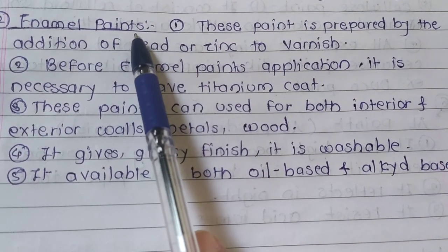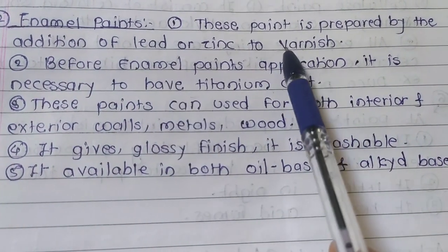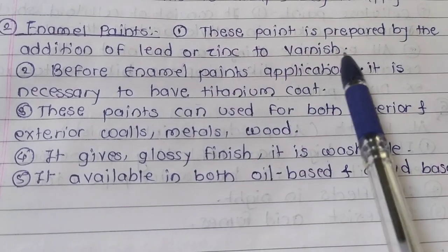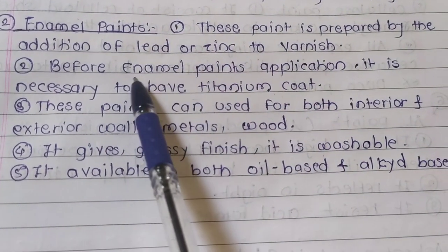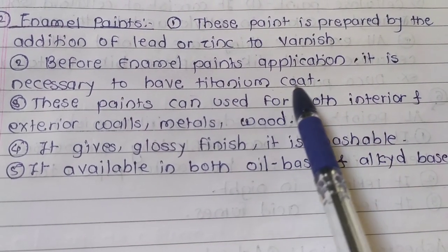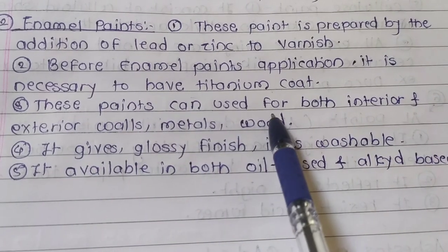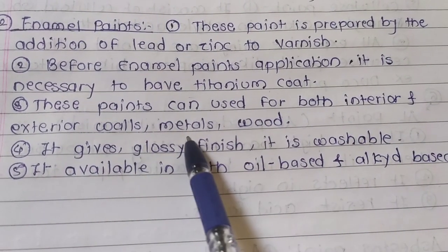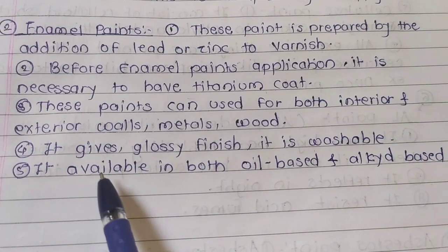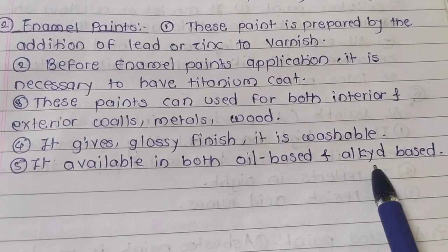Enamel paint. This paint is prepared by the addition of lead or zinc to varnish. Before enamel paint application, it is necessary to have a titanium coat. These paints can be used for interior and exterior walls and metal surfaces. It gives a glossy finish, is washable, and is available in both oil-based and alkyde-based forms.